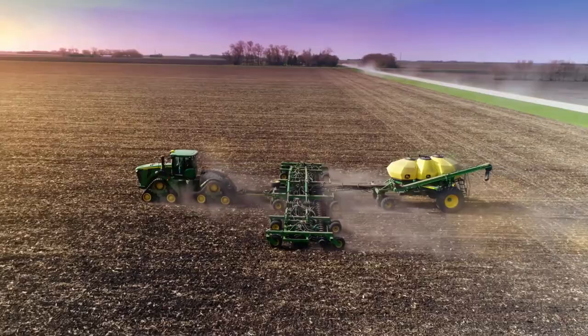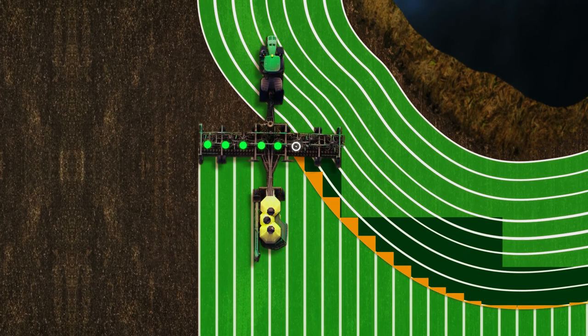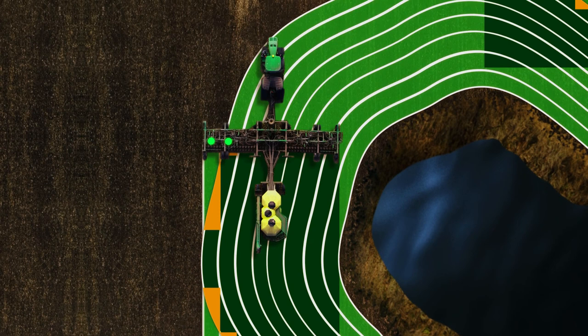Engage Zone Control offers section control to growers who want to get the most out of their equipment. Our system communicates with your air seeder's existing GPS mapping system to prevent excessive overlap and wasted seed.